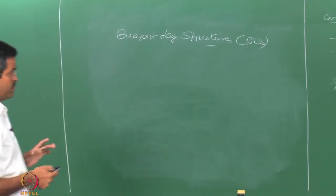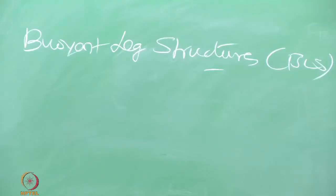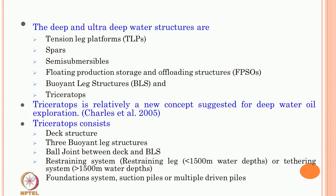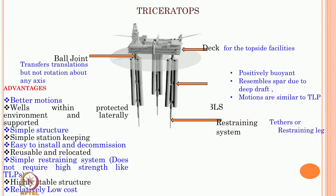Triceratops was a relatively new concept introduced by Charles Cittall in 2005, consisting of a deck structure, three buoyant leg structures, and a ball joint connecting the deck and BLS. So BLS and deck were isolated by a special arrangement — a ball joint. The restraining system was similar to that of TLP and SPAR, having a tether system, with suction piles and multi-driven piles as foundation, commonly used as in TLP. Triceratops conceptually has buoyancy chambers that can be de-ballasted and ballasted for installation, since the deck and the buoyant leg structures are isolated by a ball joint connected only on site.